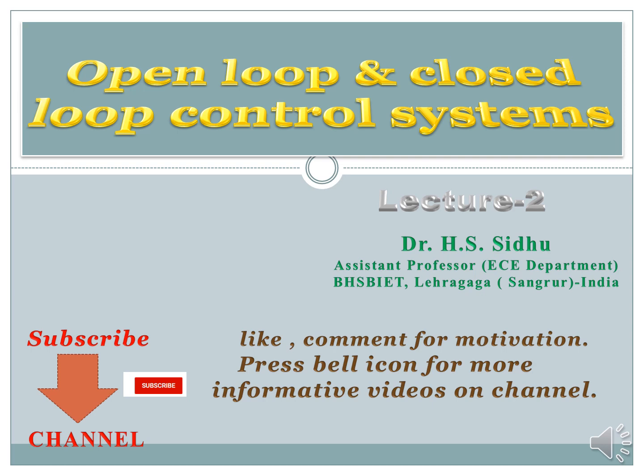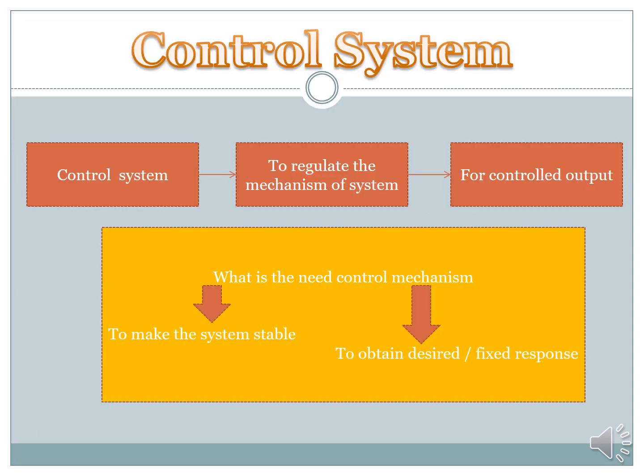Basically, a control system is a control mechanism by which we can obtain a desired or a fixed result. This is the mechanism that we operate a system and the output or the response is fixed — the desired response which we can achieve.